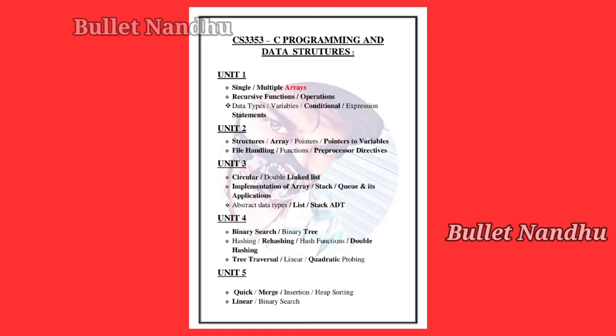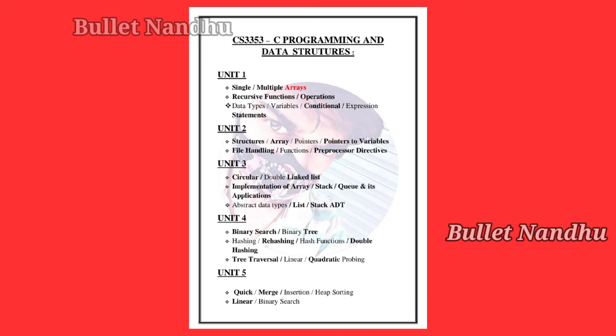Third, let's see the program exam. Unit 5 — here is the sorting and searching. That's linear search. Binary search — you can see it. Binary search tree, binary search tree. That's why you are confused about binary search.